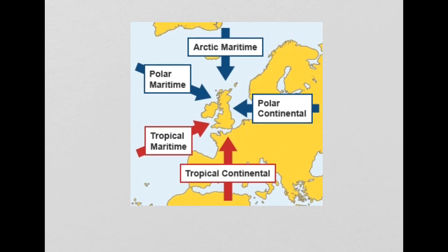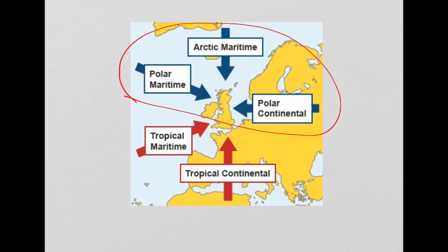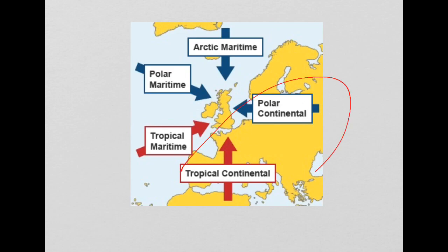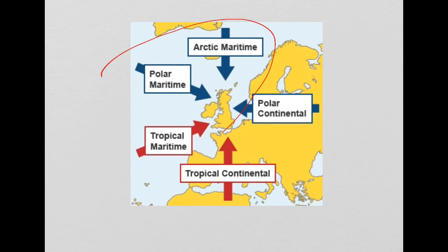These three air masses typically come from cold areas, so they have typically cold temperatures. These two air masses typically come from warm areas, so they have warm temperatures. The two continental air masses are formed over land, so they have dry characteristics. These three form over the sea and therefore have wet characteristics.